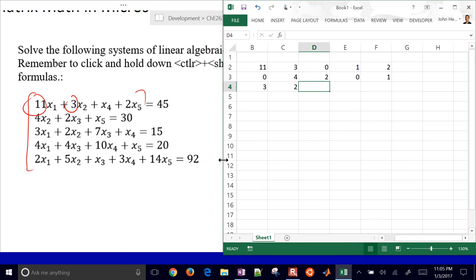And then 4, 0, 4, 10, 1, and the last one is 2, 5, 1, 3, 14. And then let's do the right-hand side as well, just go ahead and input these, and 92.